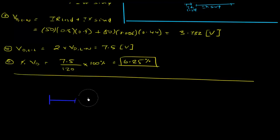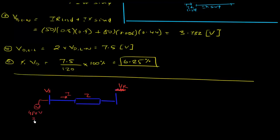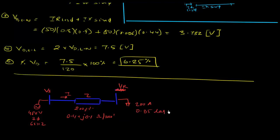Here's the circuit: a 480-volt, three-phase, 60 Hz source feeding a 200-foot conductor with impedance 0.4 + j0.1 ohms per thousand feet.